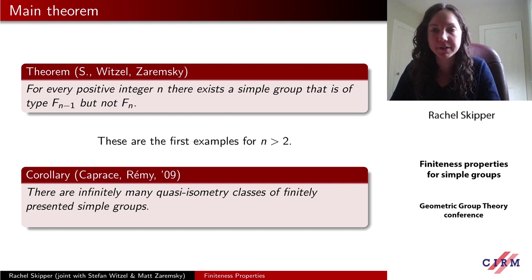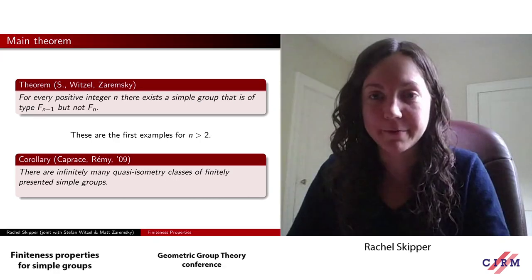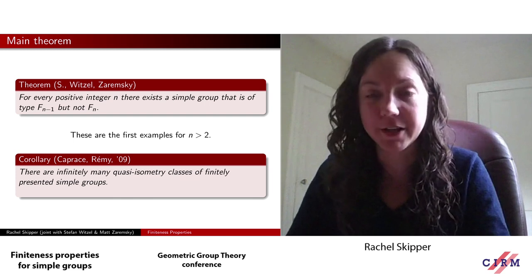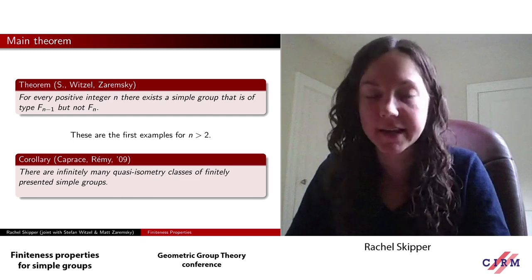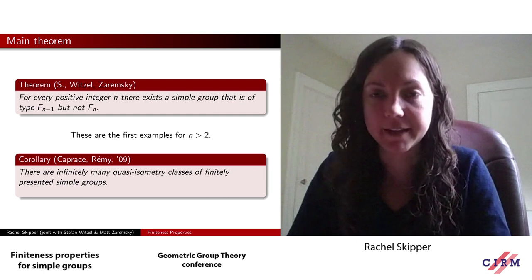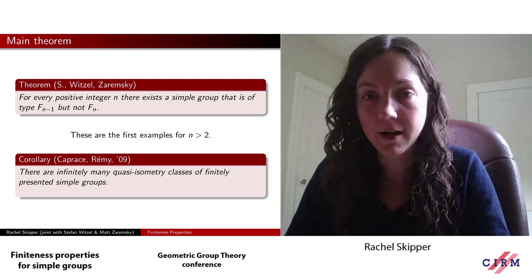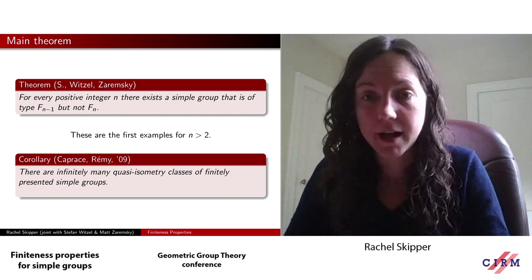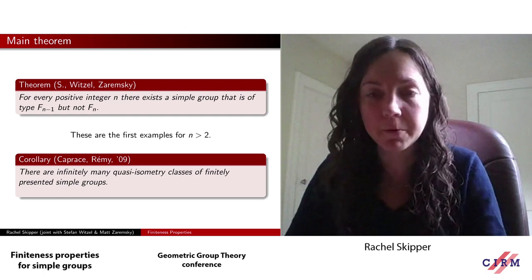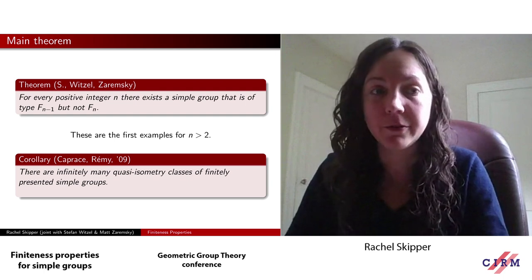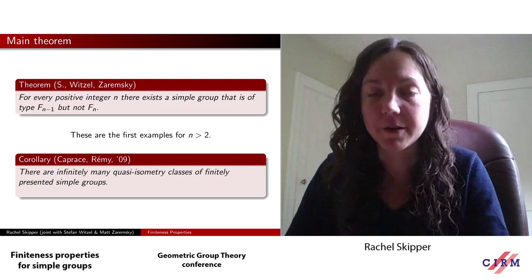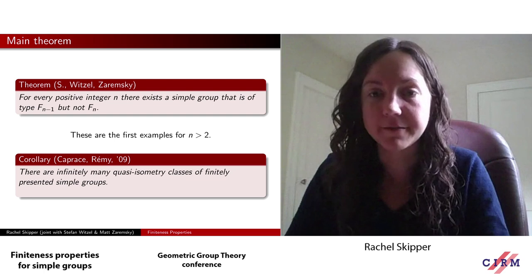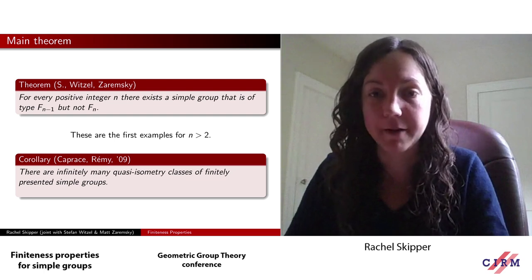These are the first known examples starting at n greater than 2. It's not so hard for us to come up with finitely generated simple groups. It's a slightly more challenging task to come up with a finitely presented simple group that is infinite. But up until this point, if we had a finitely presented simple group whose finiteness properties we knew, then it was known to also be of type F-infinity. So in particular, this gives us the first example of a finitely presented simple group that is not of type F3.